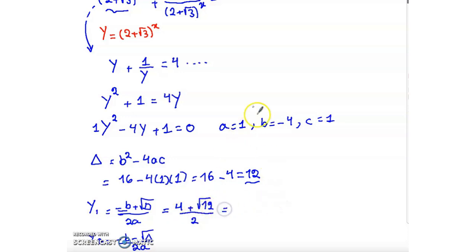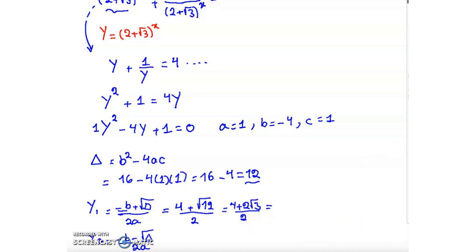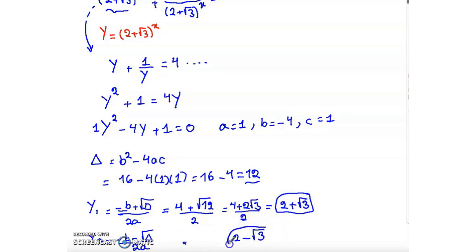√12 = √(4 × 3) = 2√3. So y₁ = (4 + 2√3) / 2 = 2 + √3, and y₂ = (4 − 2√3) / 2 = 2 − √3.